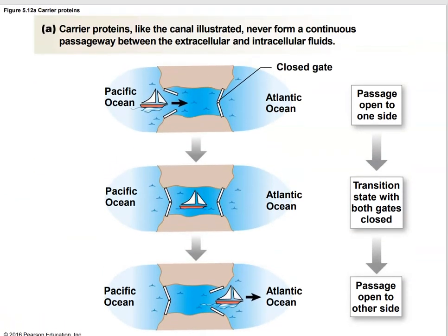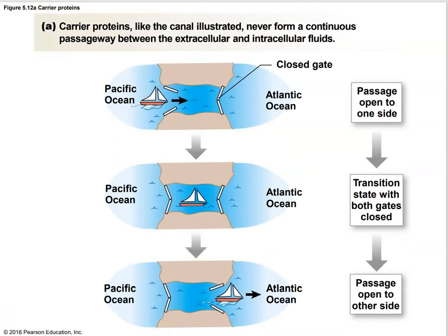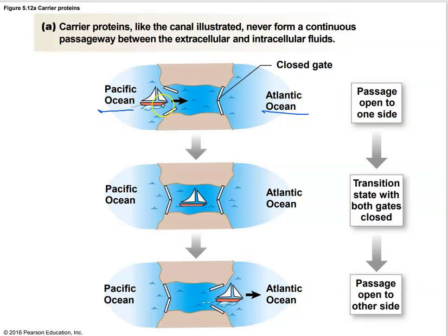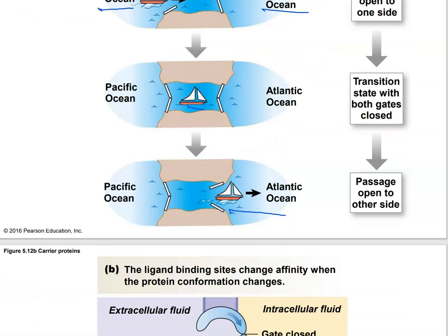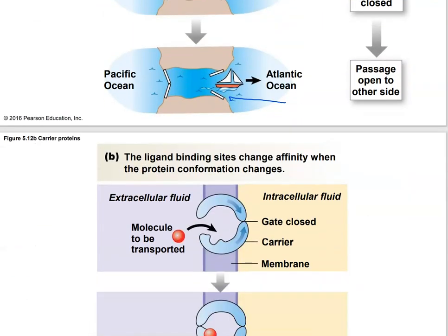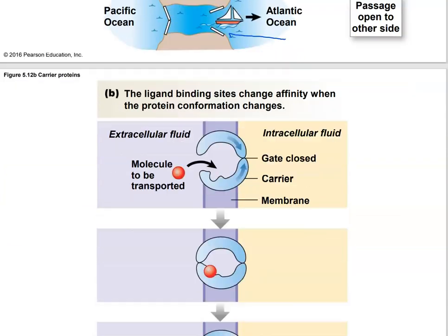Here's a sort of silly example from your textbook — something like the Panama Canal — going from the Pacific Ocean to the Atlantic Ocean. You let a little boat inside the canal, close the gate behind it, and then open on the other side and let it out on the Atlantic side. That illustrates how gating mechanisms and transport molecules work in the membrane.